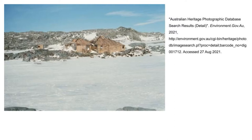During summer, Antarctica is on the side facing the sun and is in constant sunlight due to the Earth's tilt. In the winter, Antarctica is faced away from the sun, and thus the reason for the darkness. Did you know Antarctica is the highest continent on Earth? It is an ice sheet that goes a mile and a half above sea level. This is what makes it cooler than the North Pole — its elevation.